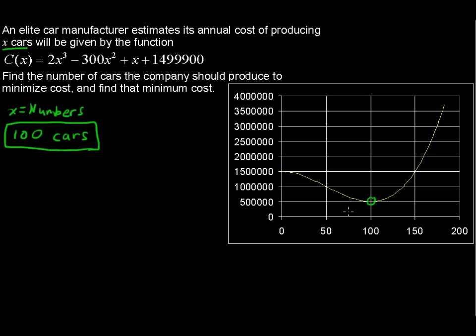Okay, then the y value here is the function, is the cost. And that is $500,000. So the minimum cost then will be that y value. So the minimum cost then equals $500,000 annually.